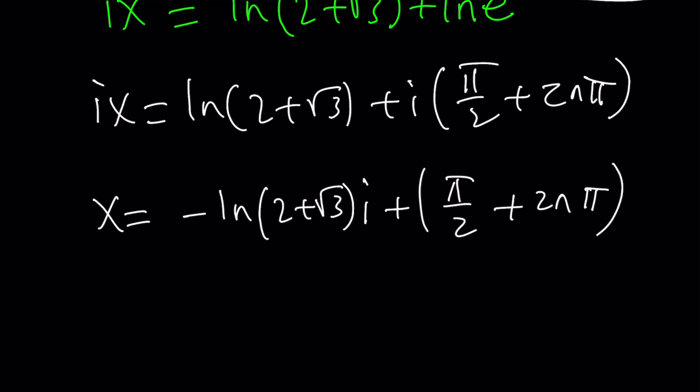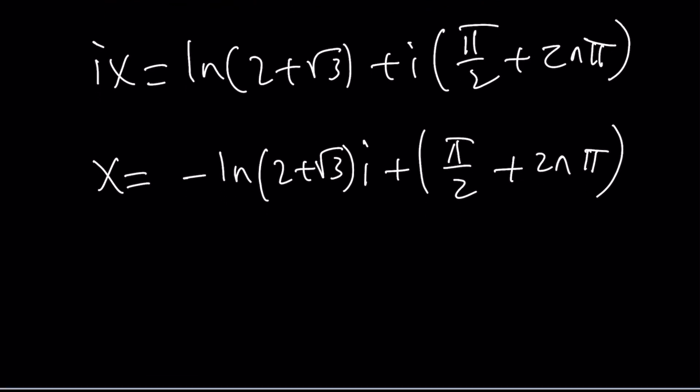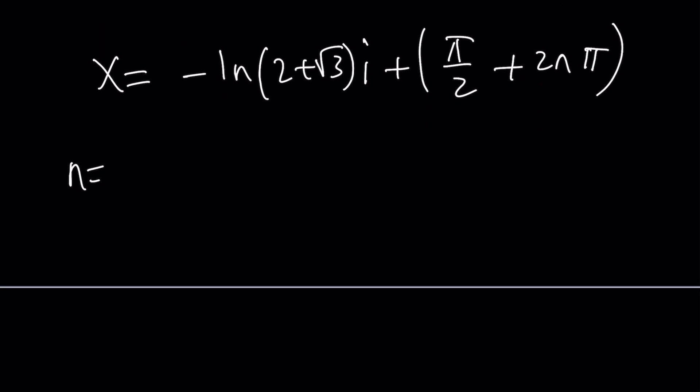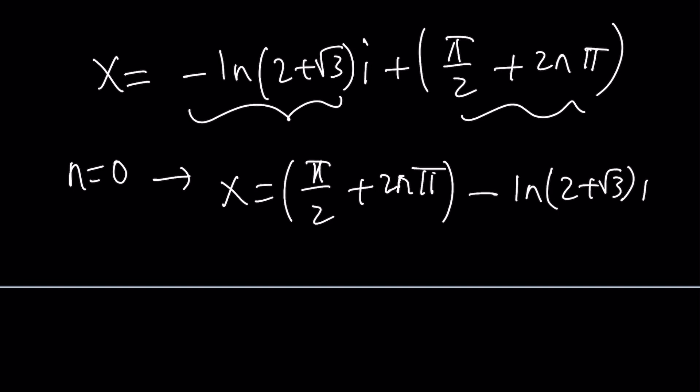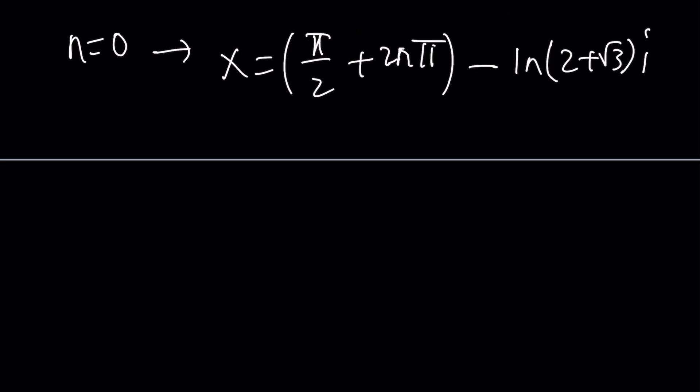And obviously, n is an integer. So you can replace n with certain things. Such as you can replace n with 0 if you want. And also, this is the real part, that's the imaginary part. So you can write the real part first. x equals pi over 2 plus 2n pi. And then you can subtract. This is the real part from that ln 2 plus root 3i. And this is going to be approximately. And for n equals 0. Of course, I was supposed to get rid of this and write it as x equals pi over 2.